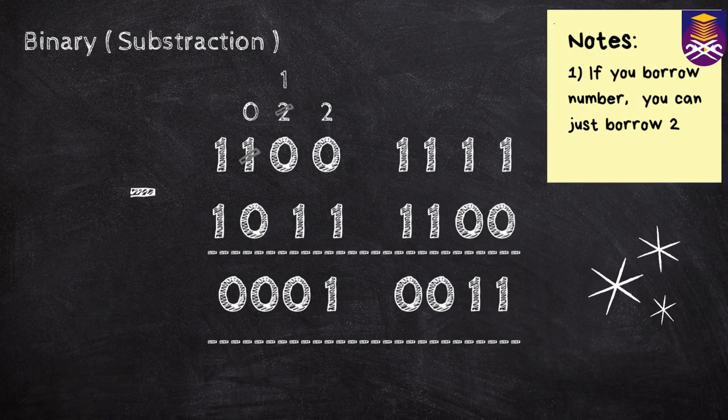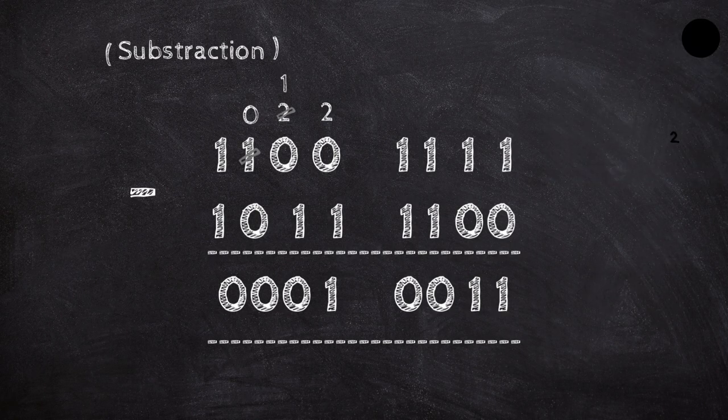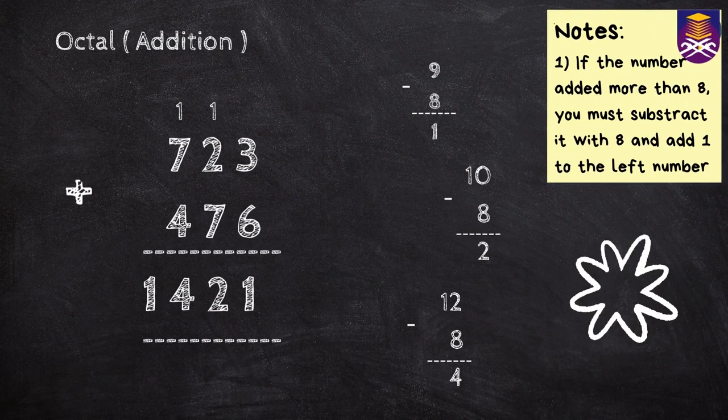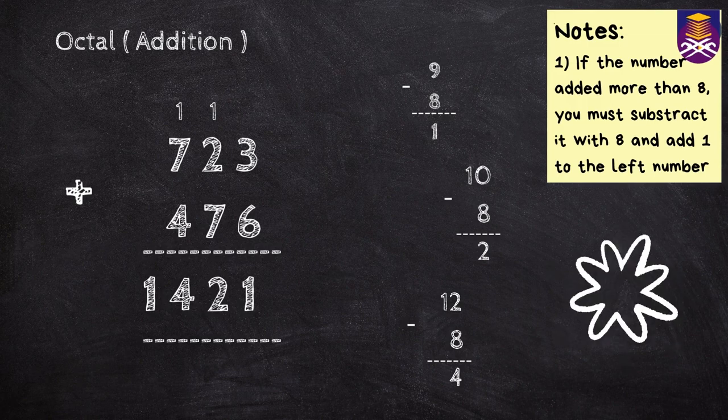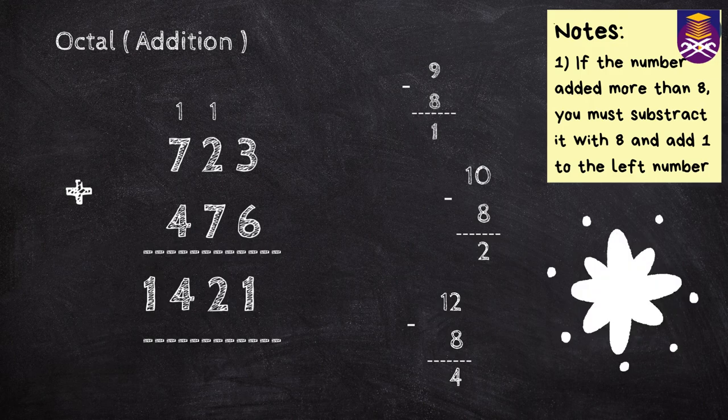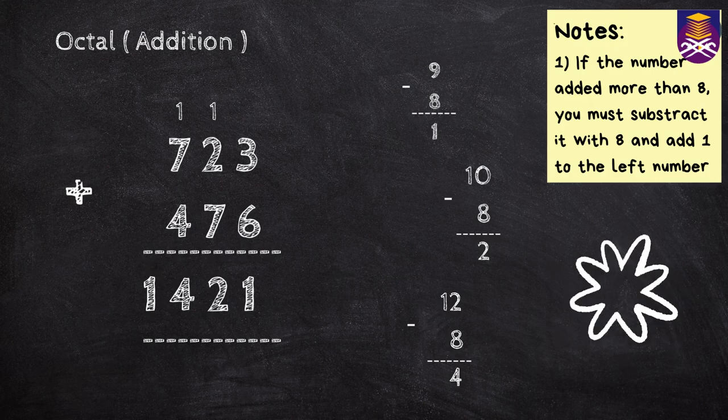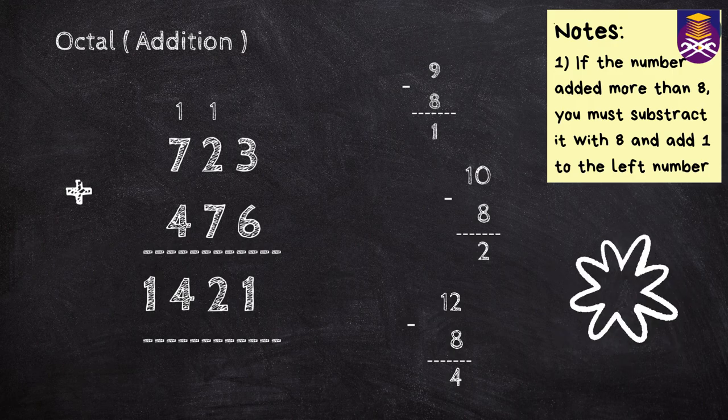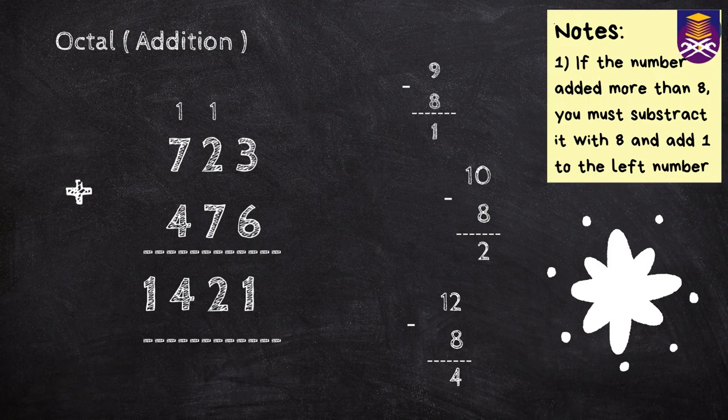So it will be 2 minus 1. Moving on to the octal addition, you must remember that if the number added more than 8, you must subtract it with 8 and add 1 to the left number. Such as example, 3 plus 6 is 9. So we minus it with 8 and we got 1.